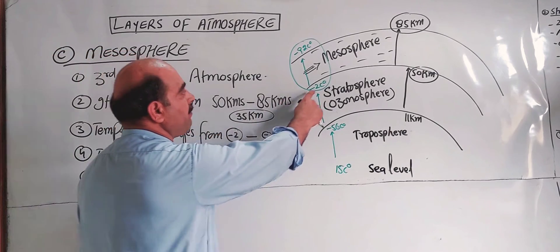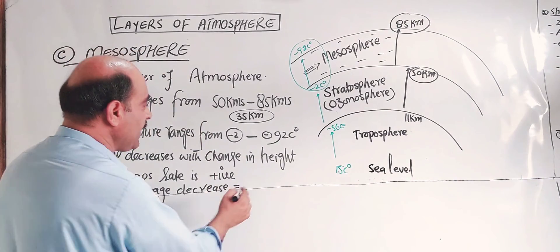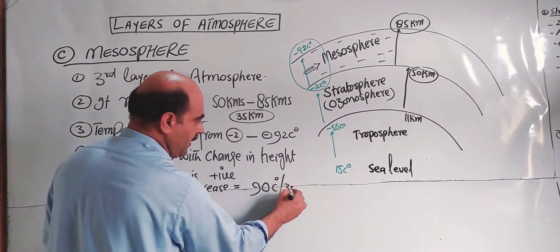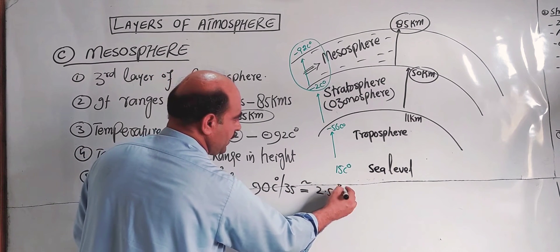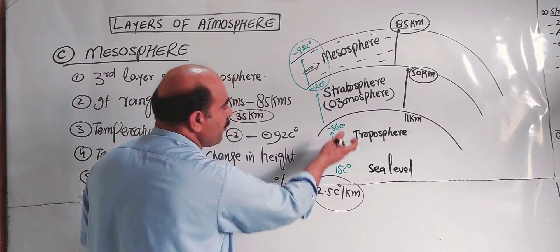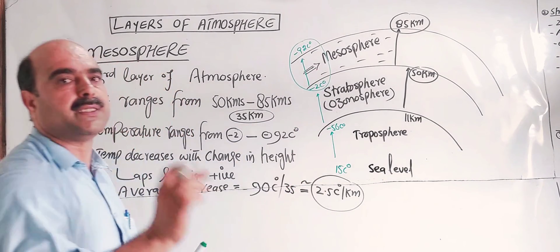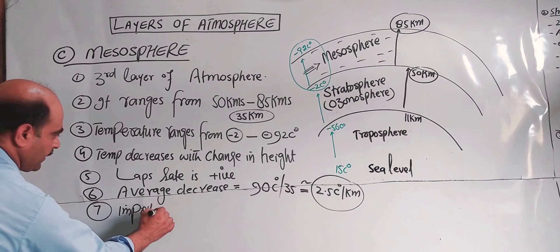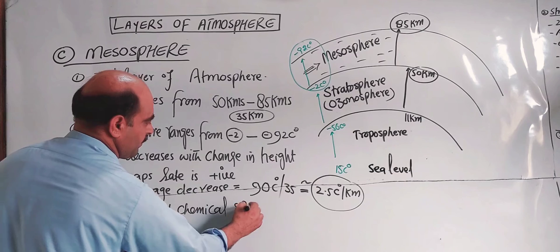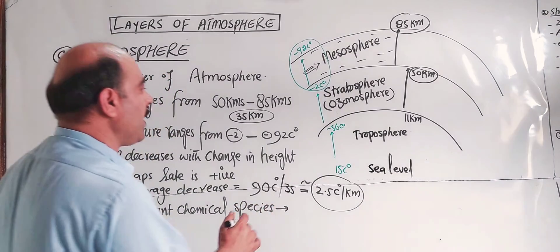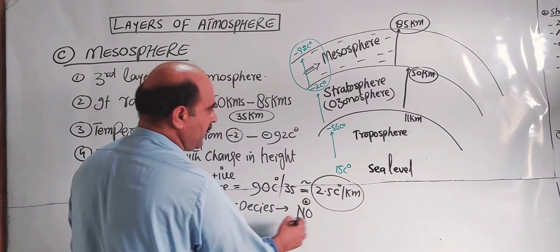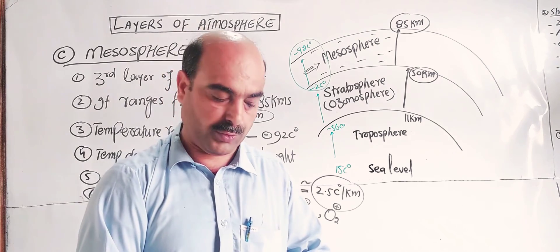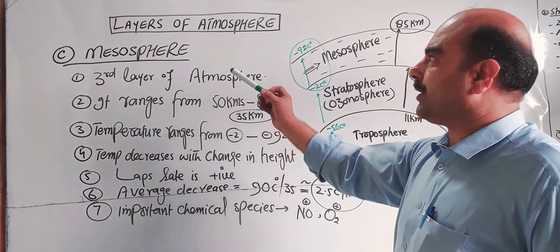The total temperature decrease is 90 degrees over a 35 km range. Dividing 90 by 35 gives approximately 2.5 degrees per kilometer — that is the average lapse rate. Important chemical species in the mesosphere include nitric oxide, iron, oxygen, and ionic species.